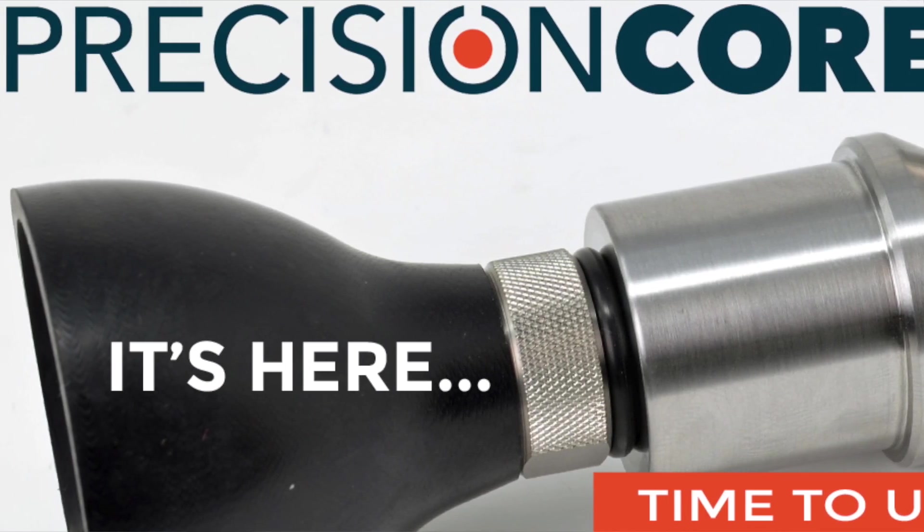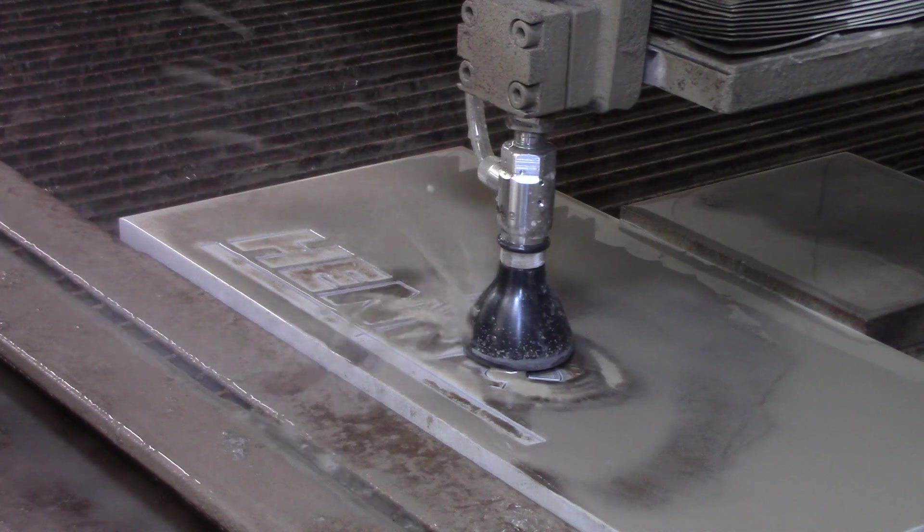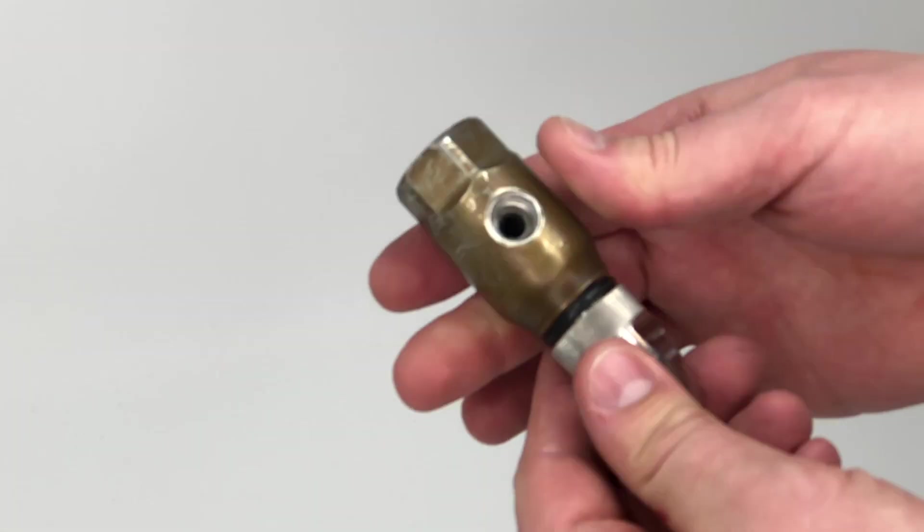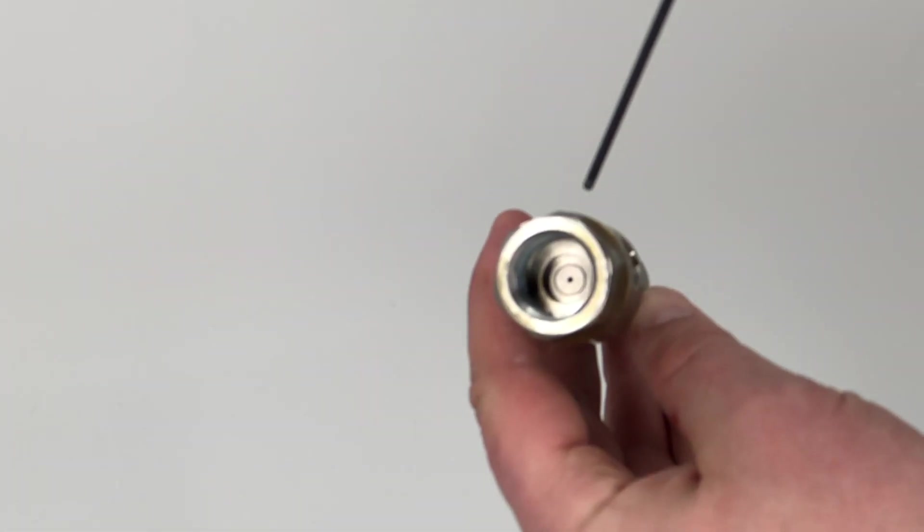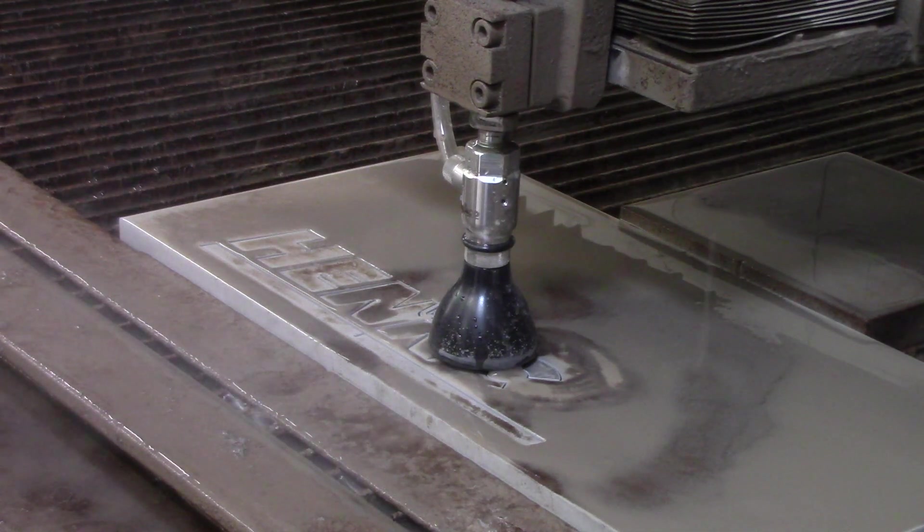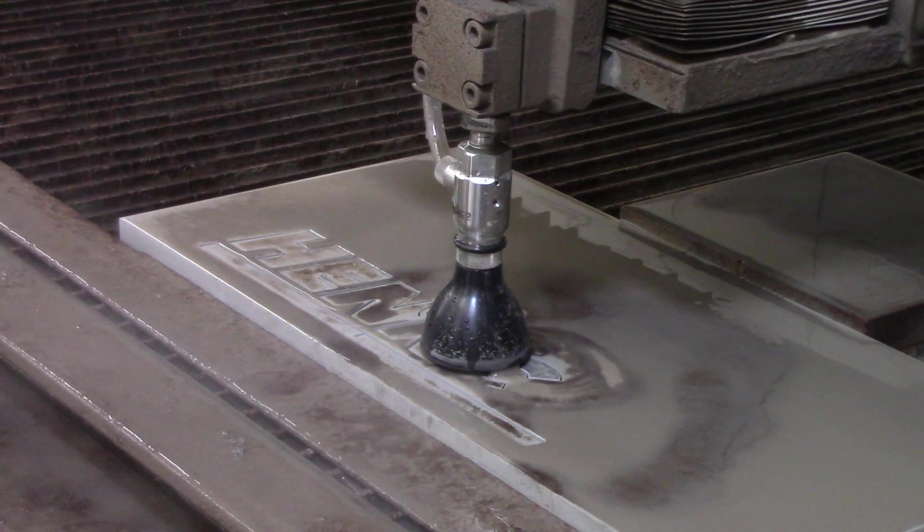One of the unique features of the Henco diamond cutting heads versus the competition is the ability to inspect, remove, and replace the carbide mixing chamber below the diamond orifice. Our diamond heads are intentionally non-integrated for this reason.